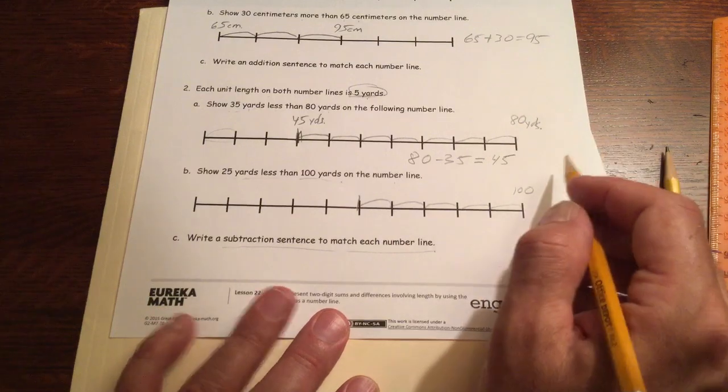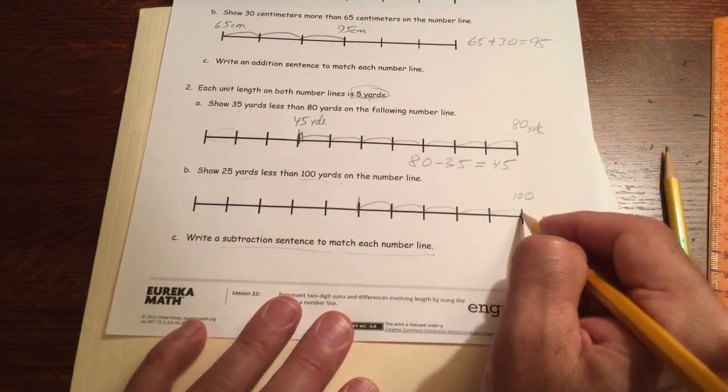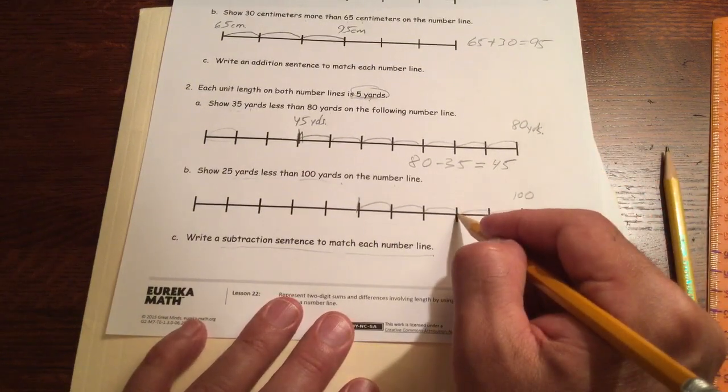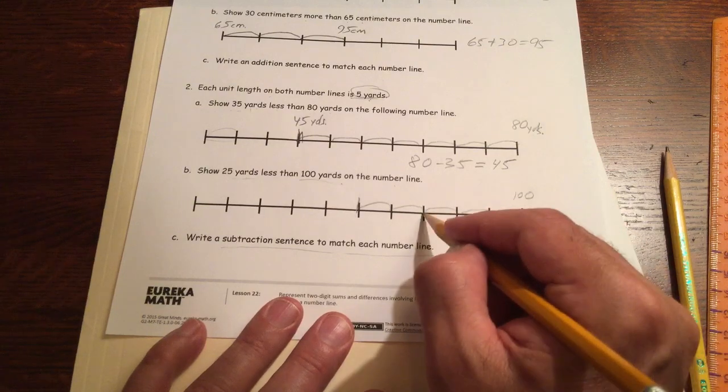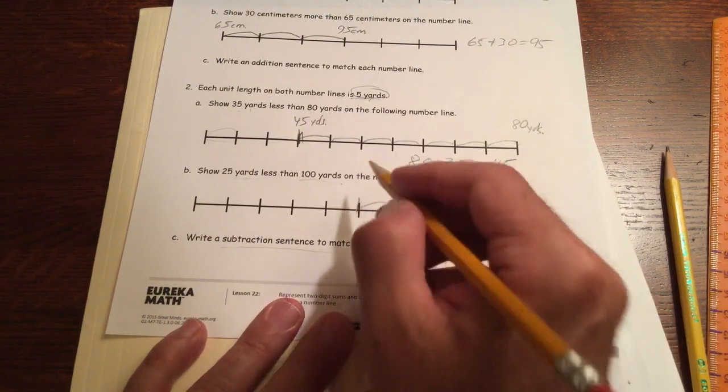We're going to stop there. If we count backwards by fives, it's 95, 90, 85, 80, 75.